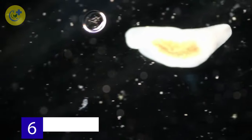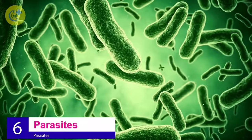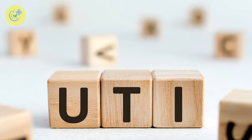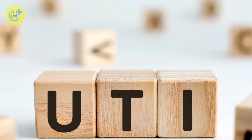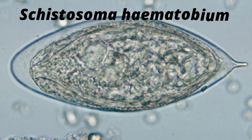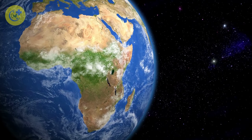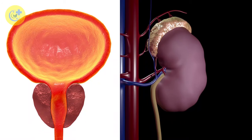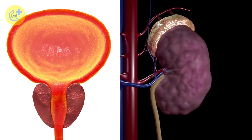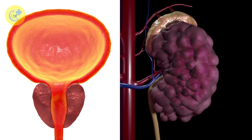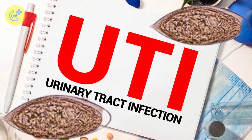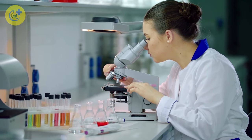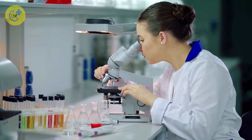Number 6: Parasites. Most urinary tract infections are caused by bacteria, but some can be caused by parasites. The most common parasite that causes UTI is a tiny worm called Schistosoma hematobium, which is found in Africa and parts of Asia. If you're infected with Schistosoma hematobium and you don't treat it, you could develop bladder cancer or kidney disease over time. If you have a UTI and think it might be caused by a parasite, your doctor will test your urine for eggs to confirm the suspicion and treat you accordingly.